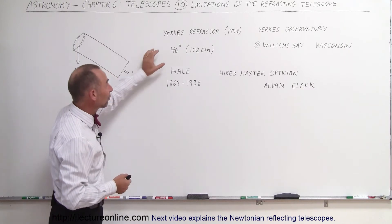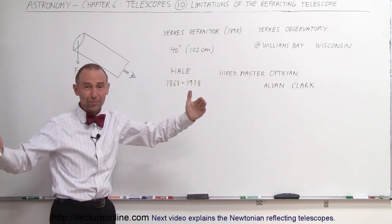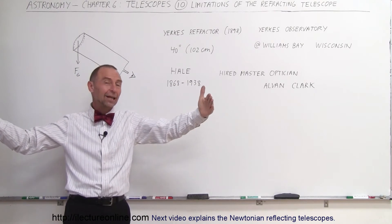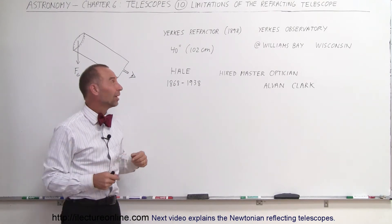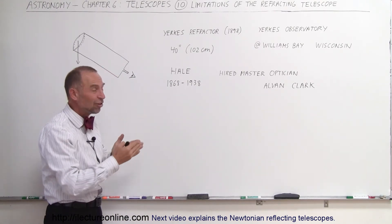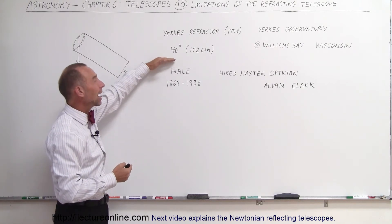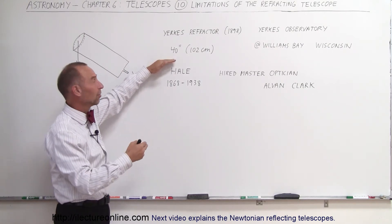Well, the lens was 40 inches in diameter, about 102 centimeters, about a meter, about this big, and it probably weighed several hundred pounds. And because of that, the reshaping from gravity made it impractical to try and even build bigger ones.